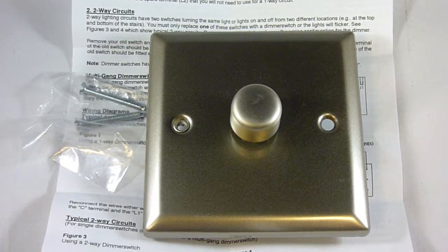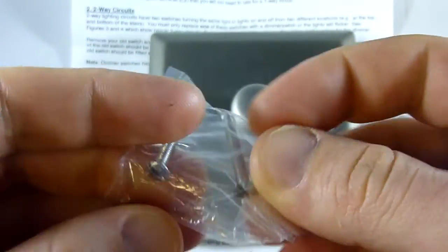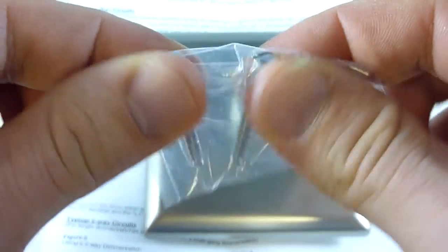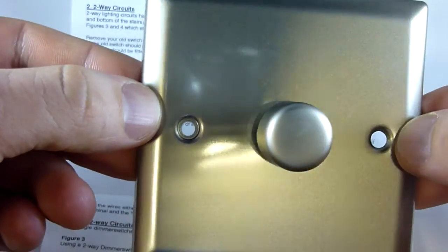I'm just going to have a quick look at the screw fixings here. A common question we get asked is how to install the actual dimmer switch itself. As you can see, the packet comes with two screws which get mounted into the front plate here.